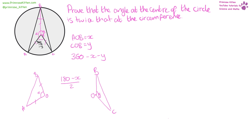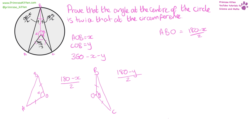We can do the same for the other half. Again, we have an isosceles triangle, the angles in a triangle have to add up to 180, and we know the angle at B, O, C equals Y, leaving 180 minus Y for the other two. So that gives us (180 minus Y) divided by 2. So the angle A, B, O equals (180 minus X) over 2, and the angle C, B, O equals (180 minus Y) over 2.